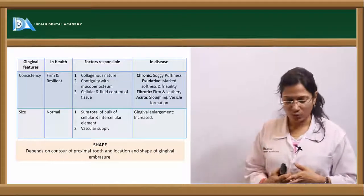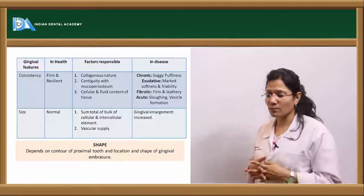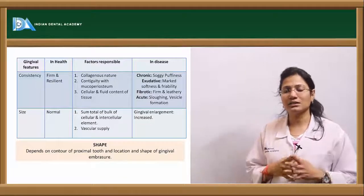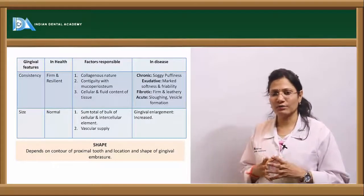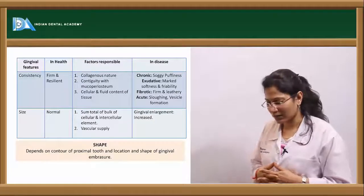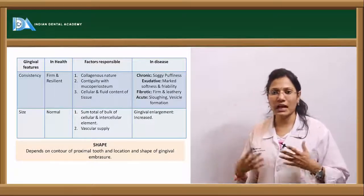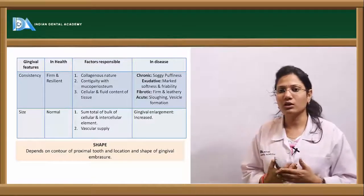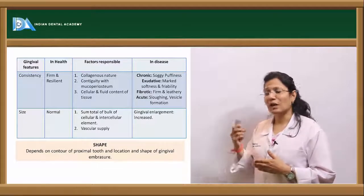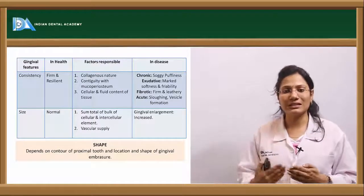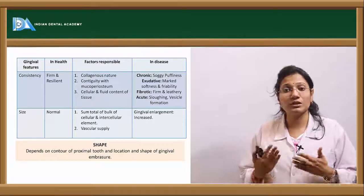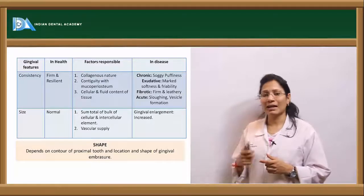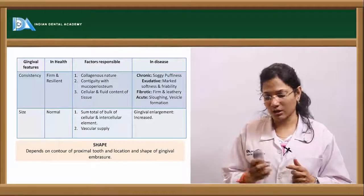Now let us see the size. Normal size of the gingiva means there is a balance between the cellular and extracellular content. The extracellular content includes fibers and ground substance. The sum total bulk of cellular and intercellular substances together constitutes the size of your gingiva. Any alteration — whether an increase in cells, intercellular substances, fibers, or ground substances — can produce a gingival enlargement. Normal size is also related to vascular supply.